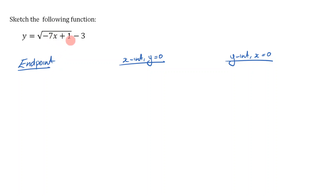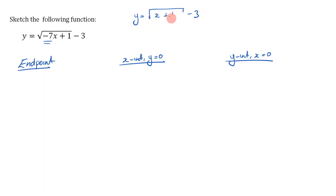This is an interesting case for figuring out the endpoint, and the reason why it's interesting is because we have this negative 7 in front of our x, which makes things a little different. So far all we've really seen is something like the square root of x plus 1 minus 3, where the coefficient of x is just a 1. That simpler case is straightforward, but now that we have a negative 7 out the front, we need to be careful.